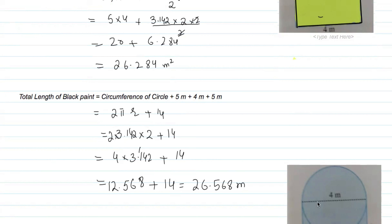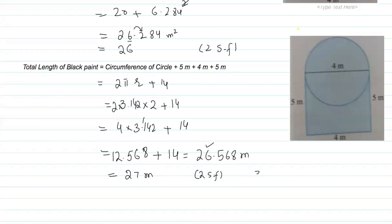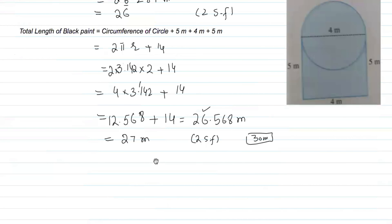This length is our answer. Note: the book answer gives 26 m at 2 significant figures. The 4 m dotted line is not counted as it is a construction line, not a painted black line. So our correct answer is approximately 27 m.